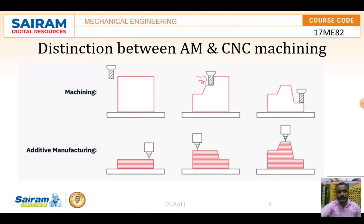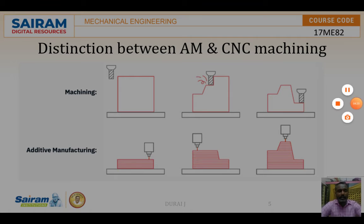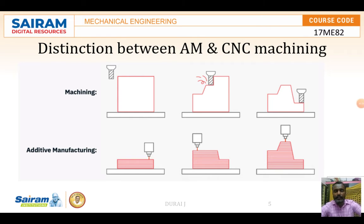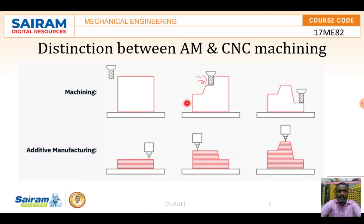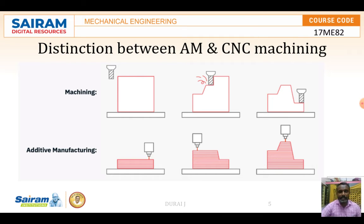Now let's look at the difference between additive manufacturing and CNC machining. In CNC machining, material is removed to obtain the required shape. But in additive manufacturing, material is added to get the required shape. In CNC machining, material wastage is more compared to additive manufacturing, where wastage is minimum. Also, in additive manufacturing the operating software is very easy, but CNC machining requires writing programs and skilled labor.